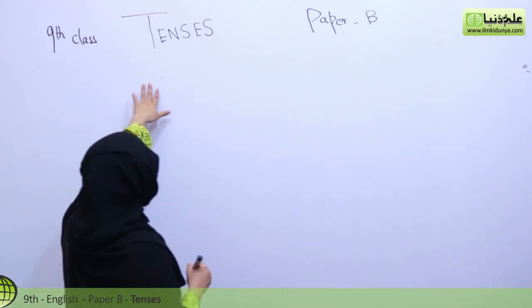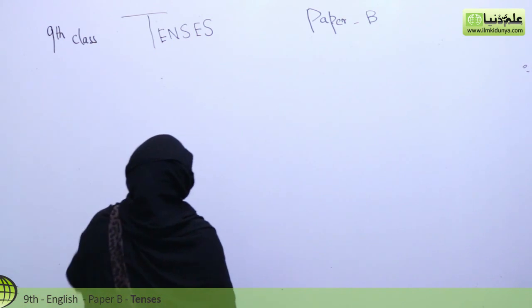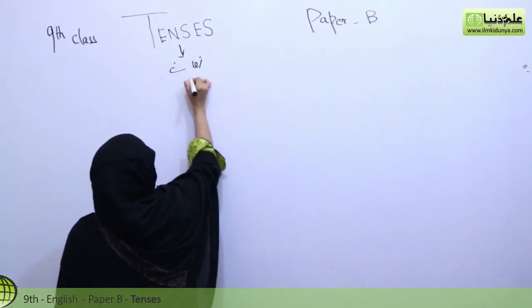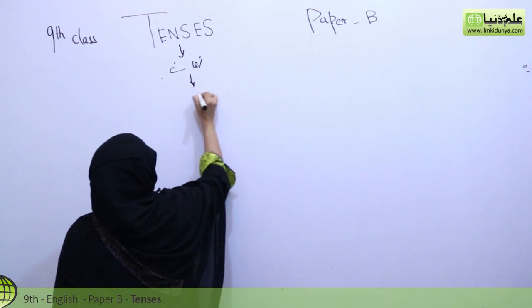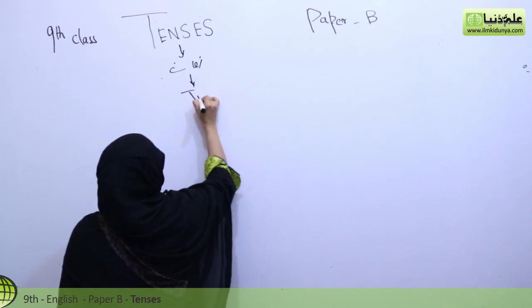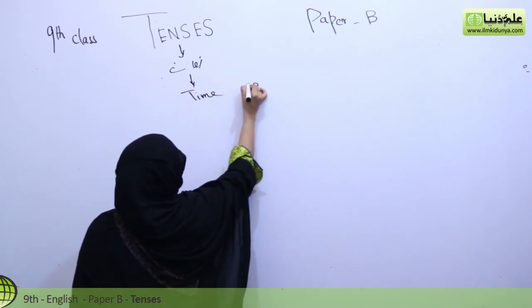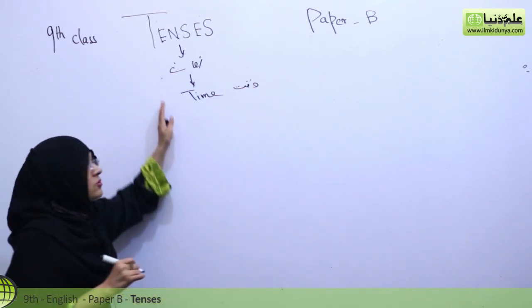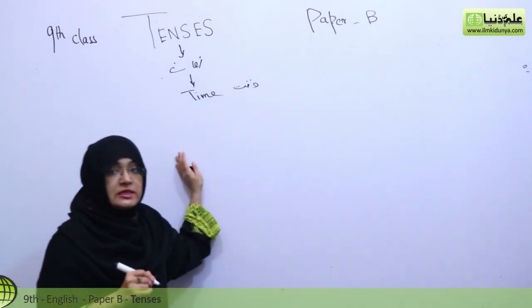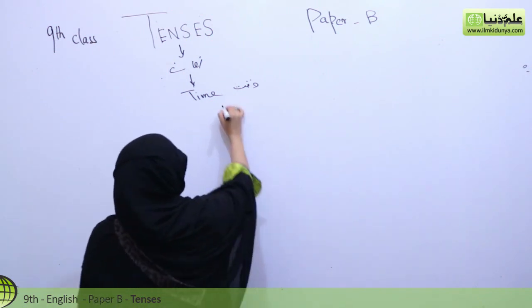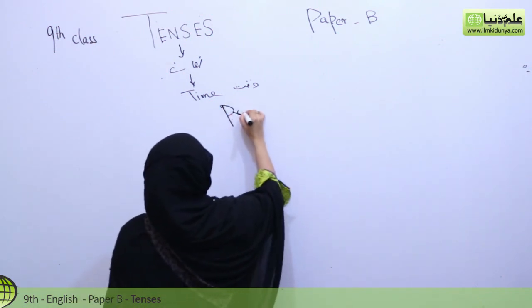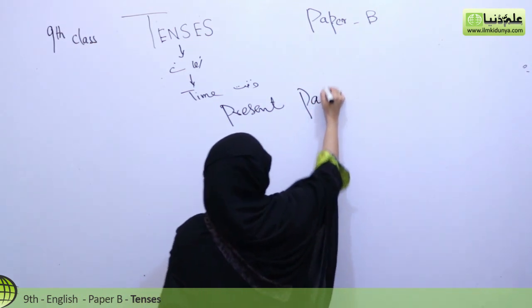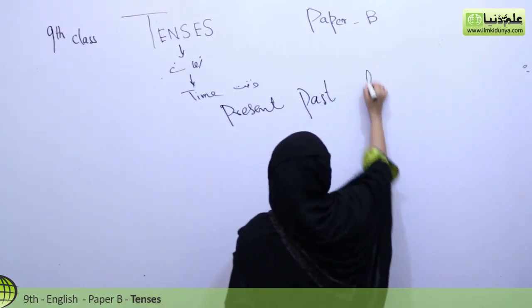Tenses — what do tenses mean? Tenses mean 'zaman' — our time. We have how many times? We have three: present, past, and future.